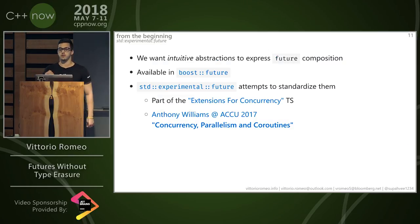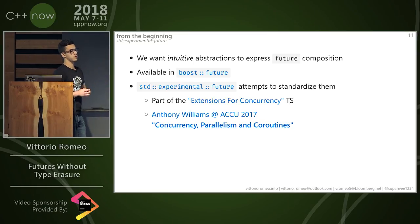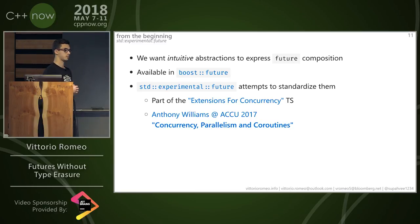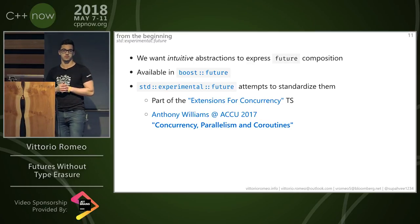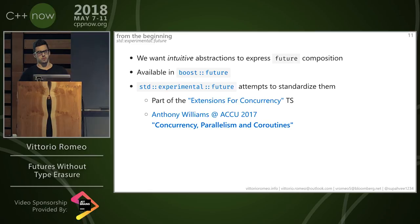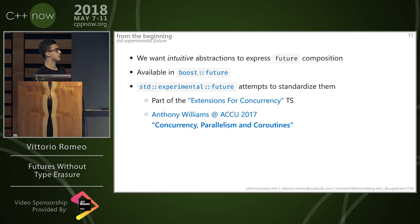So what do we want from std::future? We want abstractions that are intuitive and allow us to express composition easily. These are already available in Boost.Future — you define some macros before including it and get .then() and when_all(). We're also trying to standardize them; we currently have an experimental future as part of the Extensions for Concurrency TS. There's a great talk by Anthony Williams at ACCU 2017 — "Concurrency, Parallelism, and Coroutines" — which explains these extensions alongside coroutines and is really good for understanding what SG1 has been working on.